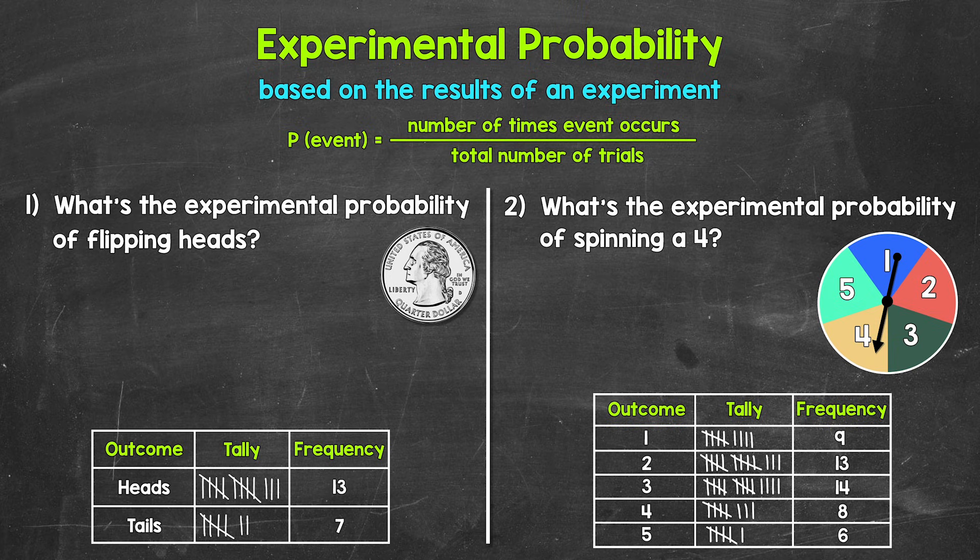Now remember, probability tells us how likely something is to happen. In other words, the chance of something happening. Experimental probability tells us how likely something is to happen based on the results of an experiment. It's based on data collected from repeated trials. This will make more sense as we go through our examples.